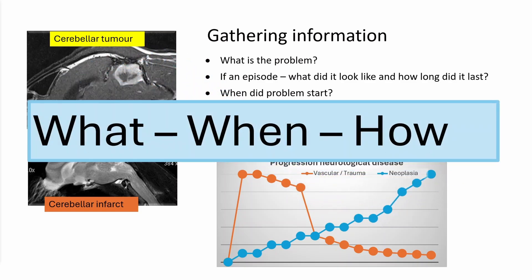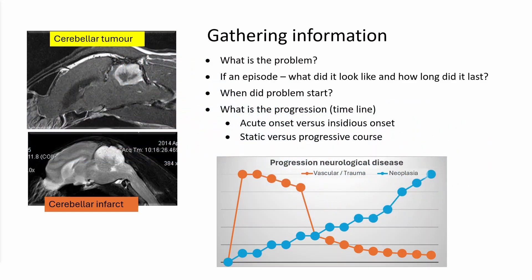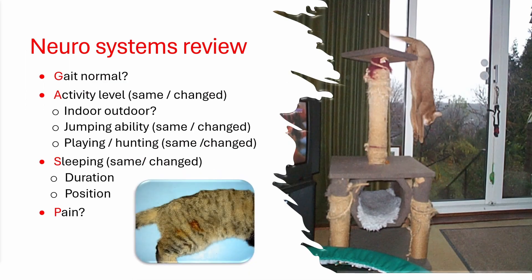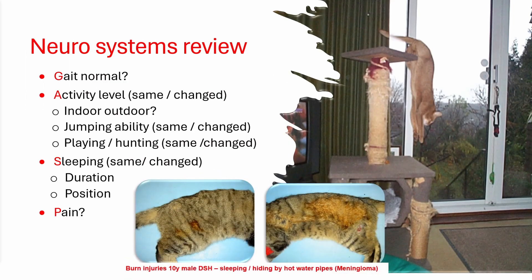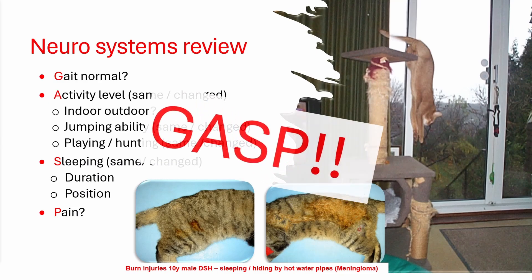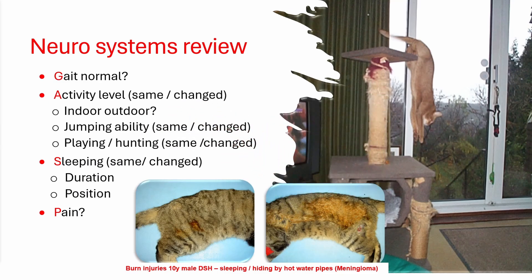So you need to know what, when, and how — those are the most important questions. The next thing is to review the neurosystems, and for this I use the acronym GASP: Gait, Activity level, Sleeping, and Pain. These aren't specific to neurology, but they can be altered quite a lot by some neurological diseases, and if you don't ask the question, you don't get the response.